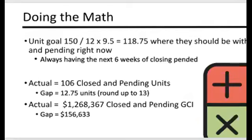Now you might be thinking, why 9.5? Our intent is to always have six weeks of closings pending. So with it being August 28th, if you look at six weeks out, that makes it nine and a half months.